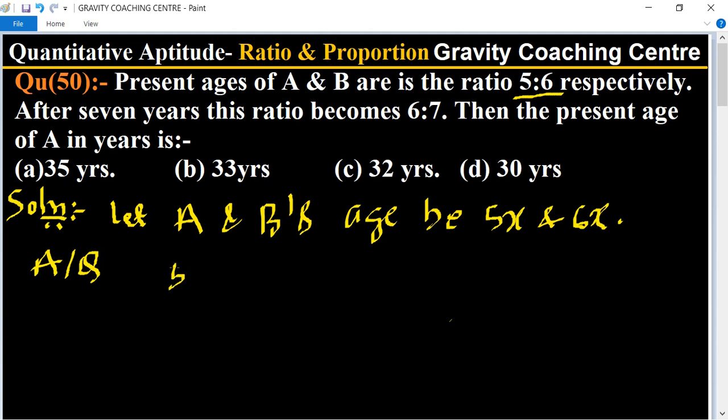means 5x plus 7 upon 6x plus 7 equal to, its ratio becomes 6 upon 7. Now you put minus 1 on both sides for shortcut.